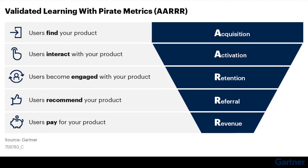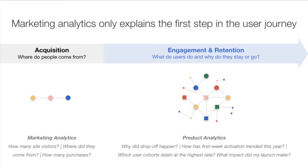Let me explain the funnel. First is acquisition — how users come to a website. Next is activation — the user likes the app and signs up. Then retention — how frequently a user comes back, like twice a day or once a week. Then engagement — stickiness, how much time is spent. Then referral and revenue — how the business makes money. After acquisition, activation, retention, and engagement are mainly measured by product analytics.